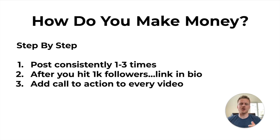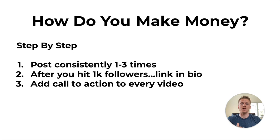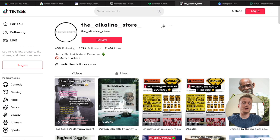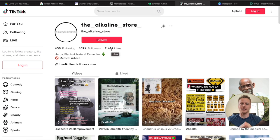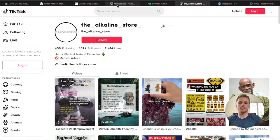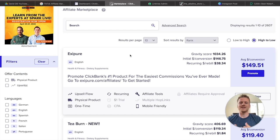Now that you know how to make those seven-second videos, let's talk about step number four — making money on your TikTok account. First, post consistently one to three times a day. This is going to allow you to hit that 1,000 follower mark really fast, because once you hit 1,000 followers on TikTok, you can add a link inside your bio. In that bio link, you're going to add your Linktree link. Then add a call to action in every single video to drive people to your bio — these videos get thousands of views, so you'll be getting clicks and eventually sales on the Exipure affiliate offer.